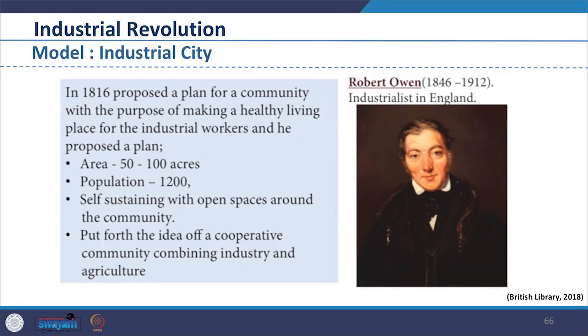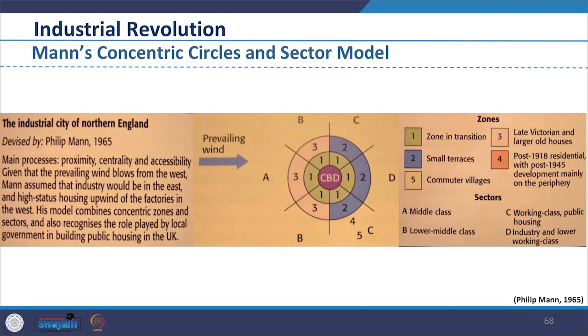The initial approach started by an industrialist in England called Robert Owen during 1846 to 1912. He proposed a plan for the community to make living healthy for industrial workers — occupying 50 to 100 acres for a population of 1200 which was to be self-sustained with open spaces around. This was evolved from the concept of a cooperative community combining industry and agriculture. It became a model of British urban development combining the sector theory with the concentric zone model.